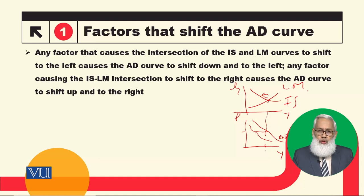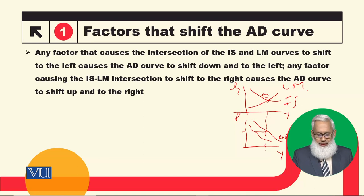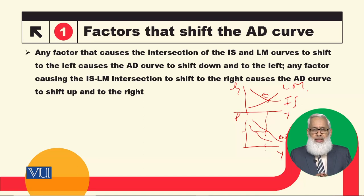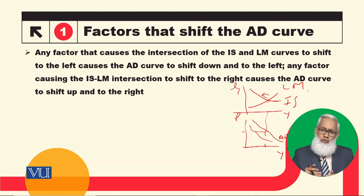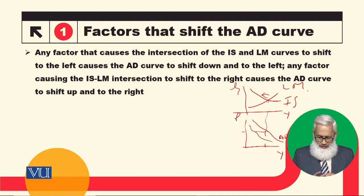And any factor — IS-LM में कोई भी ऐसी change जो इस intersection point को rightward shift करेगी, तो वो aggregate demand curve को भी rightward shift कर देगी. यह simple सी बात है — आपको समझना है कि aggregate demand curve का point कहाँ से determine होता है: by the intersection of the IS and LM curve. वो intersection point जब change होगा, तो aggregate demand curve shift होगा, अगर वो change other than price है.